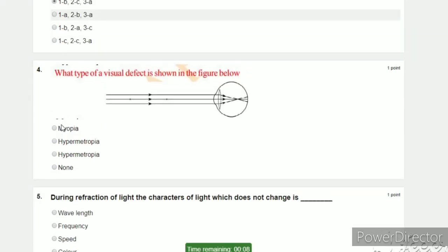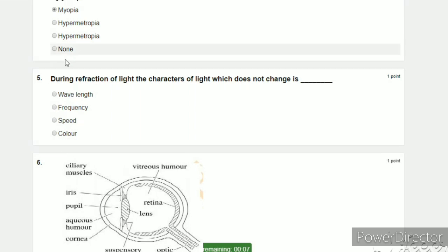Next question: what type of visual defect is shown in the figure below? During refraction, the characters of light which does not change is? In refraction, the character of light is changed. So we choose the options: wavelength, frequency, speed, color. Wavelength, speed, color all change. The answer is frequency.